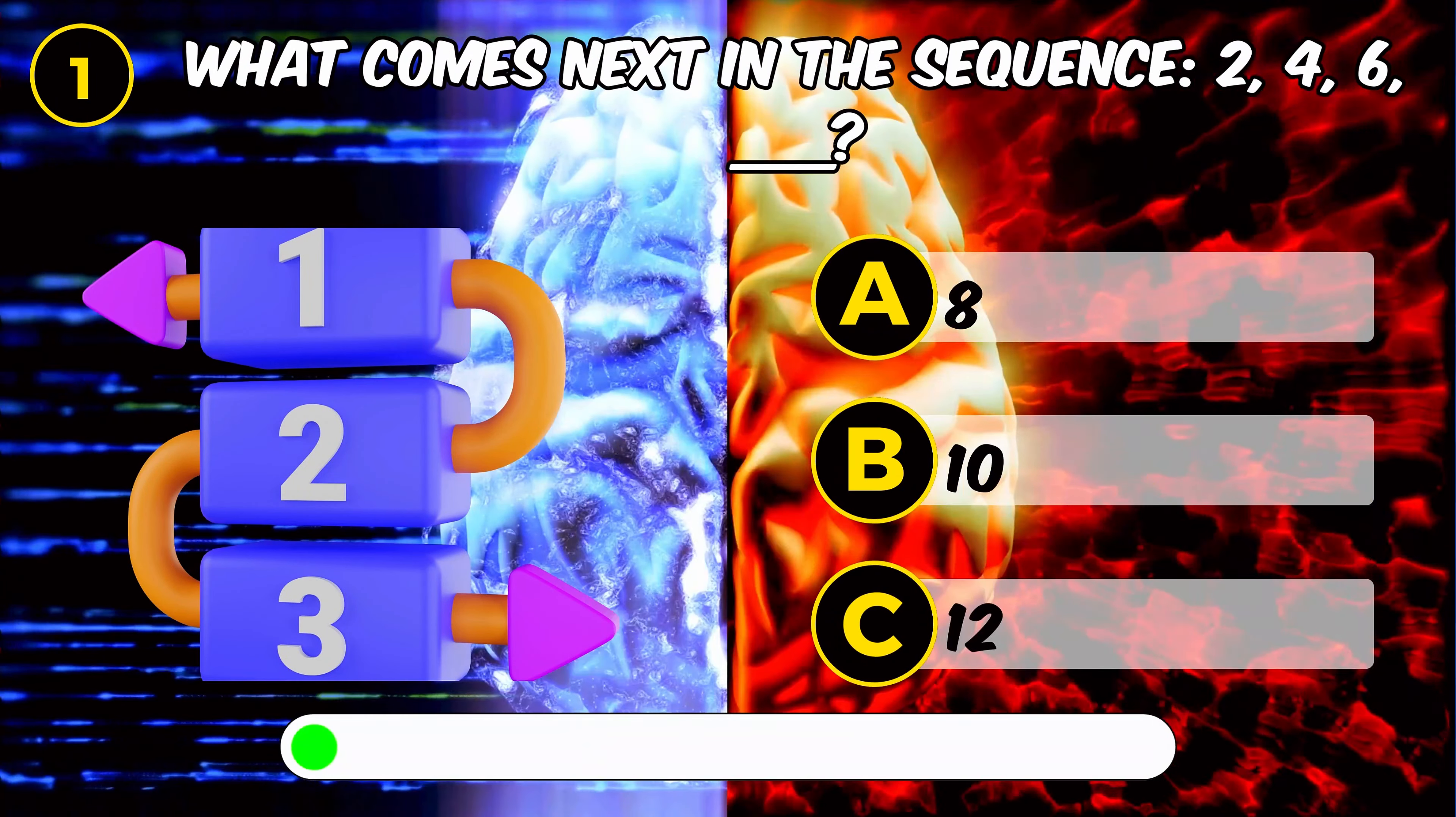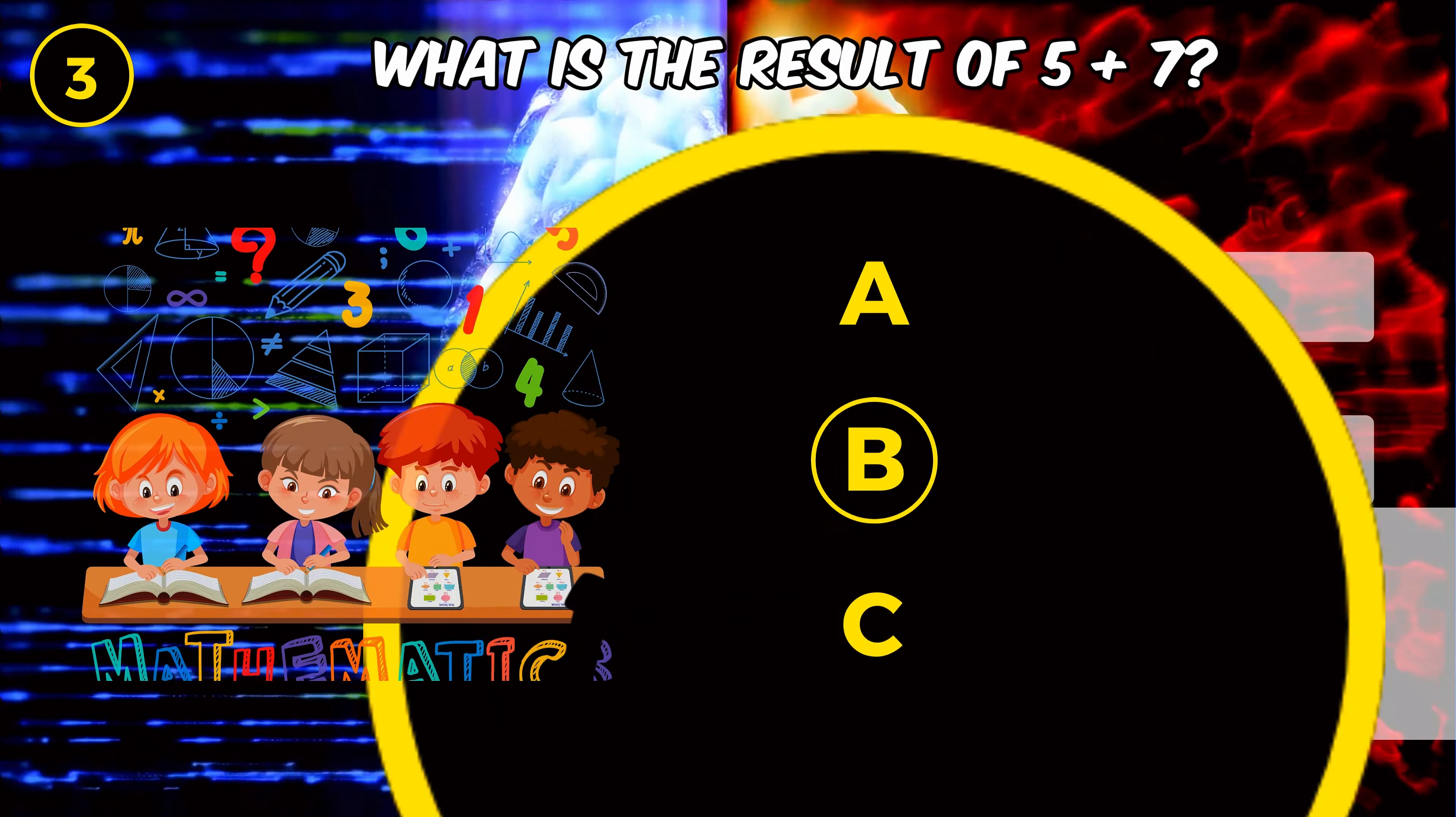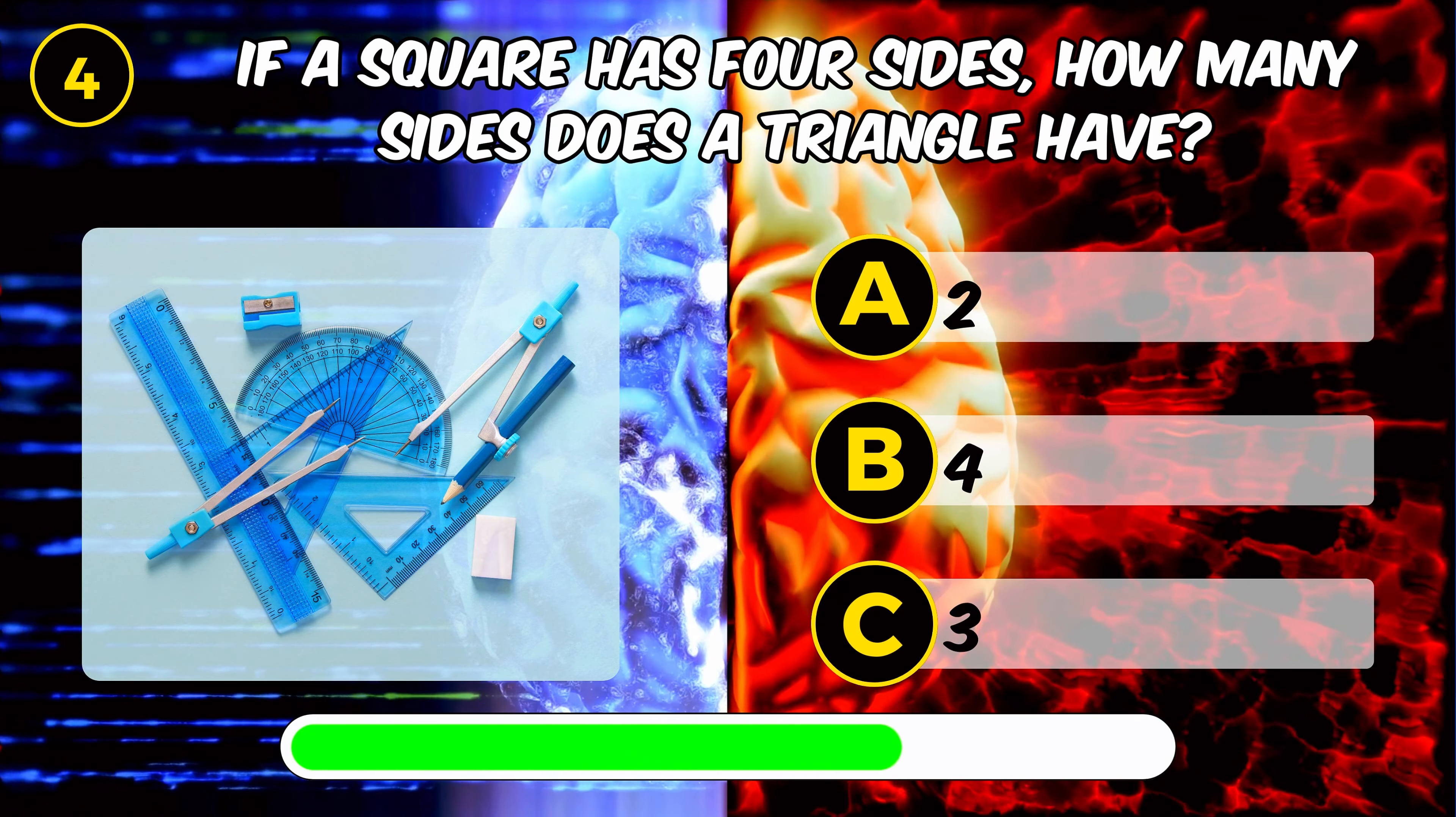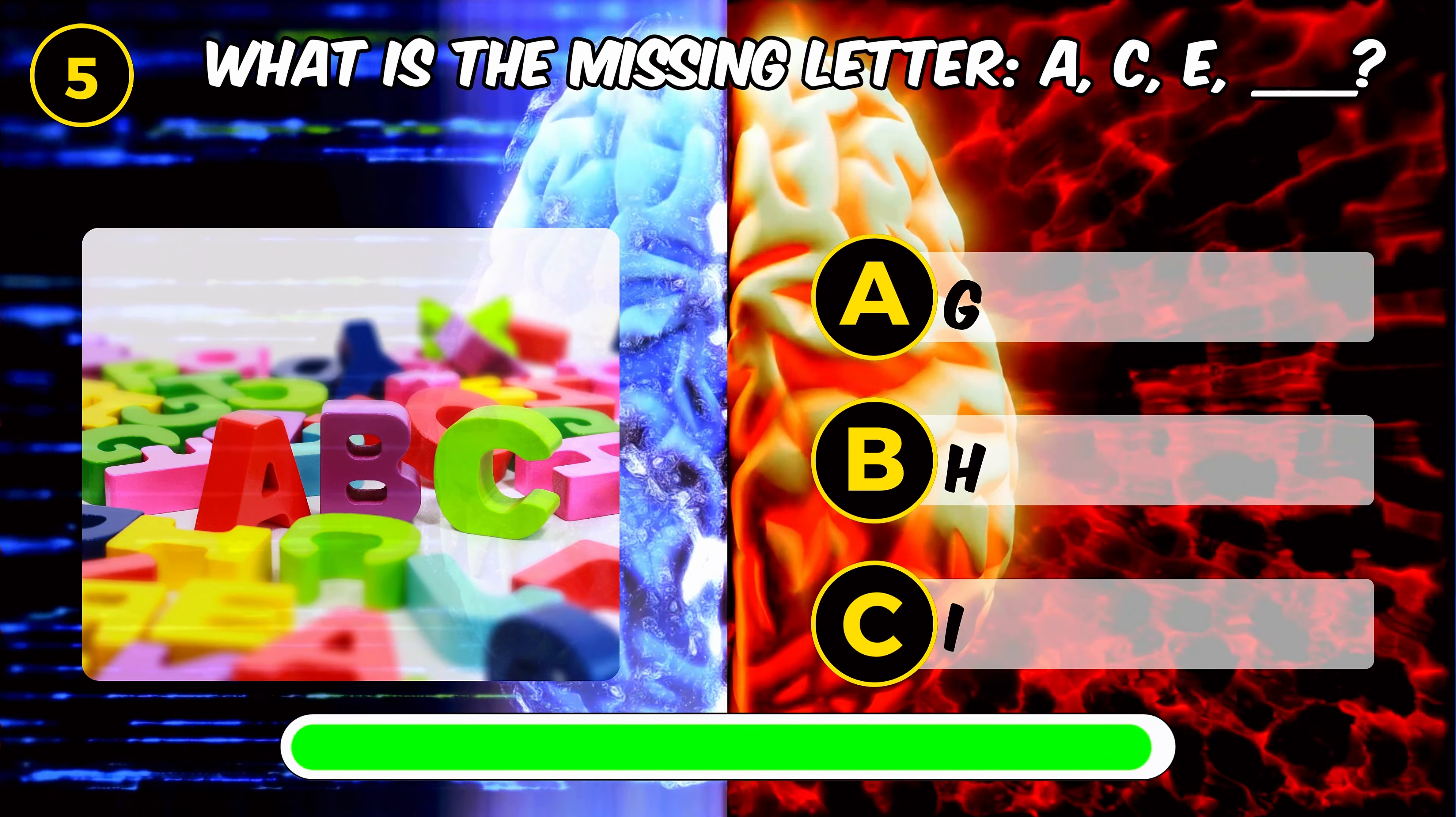What's next in the sequence 2, 4, 6? 8 is the answer. Which number is the odd one? 3, 6, 9, 12, 15? 15 correct! What is the result of 5 plus 7? It's 12! If a square has 4 sides, how many sides does a triangle have? 3 is the answer. What is the missing letter? A, C, E... It's G!